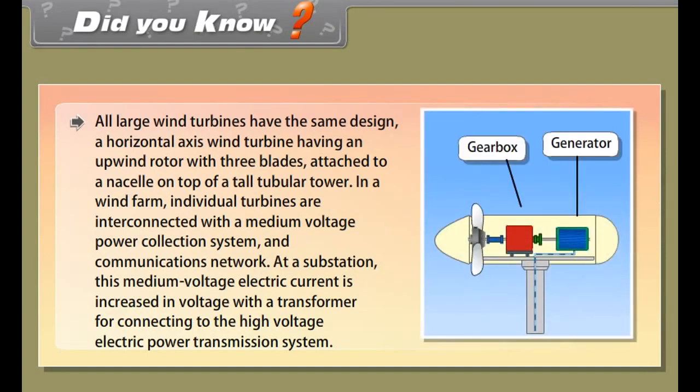Wind power is the conversion of wind energy into a useful form of energy using wind turbines to make electricity, windmills for mechanical power, wind pumps for water pumping or drainage, or sails to propel ships. A large wind farm consists of several hundred individual wind turbines that are connected to the electric power transmission network.